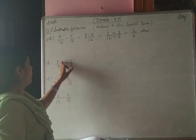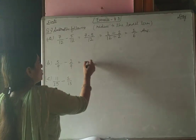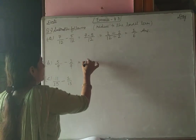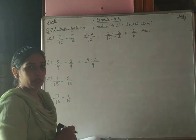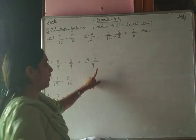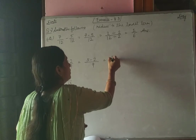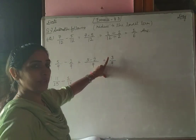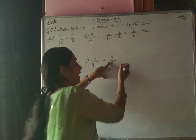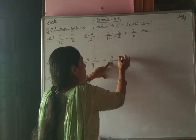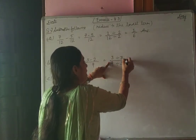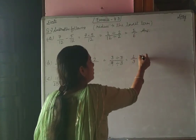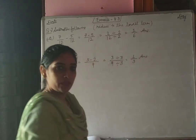Next: 5 by 9 minus 2 by 9. Here 9 is the LCM. Numerator: 5 minus 2 is 3, giving 3 by 9. Both numerator 3 and denominator 9 are divisible by 3. Dividing: 3 by 3 is 1, and 9 by 3 is 3. Our answer is 1 by 3.